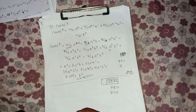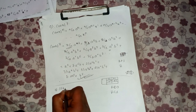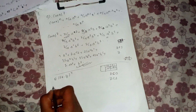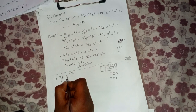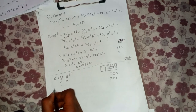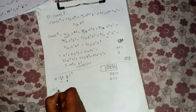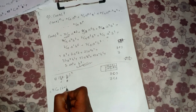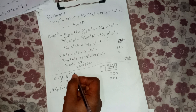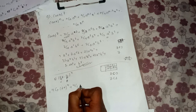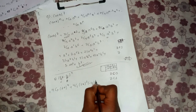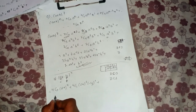Now for part b: the expression is (2x - 3y)^4. Here n = 4. We apply the binomial theorem: 4C0·(2x)^4·(-3y)^0 + 4C1·(2x)^3·(-3y)^1 + 4C2·(2x)^2·(-3y)^2 and so on.